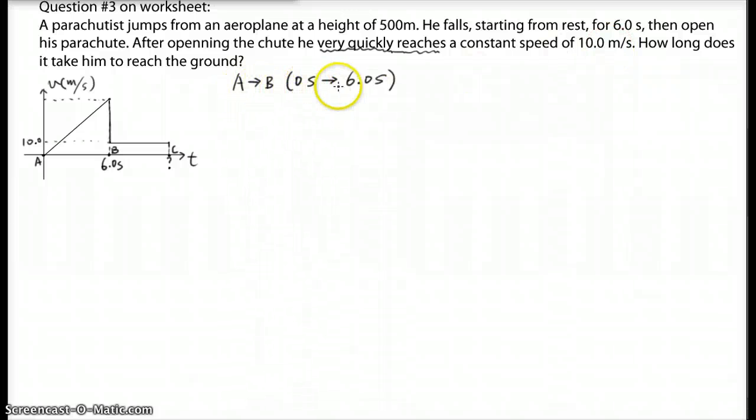So A to B, that's 0 to 6 seconds. You can find out the distance traveled by using D equals average velocity times the time. So we know the time. We don't know the average velocity. So we can find out the average velocity using V initial plus V final divided by 2. And we don't know the V final here. So we can use V final equals V initial plus AT.